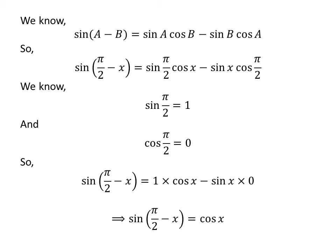As 1 times cosine of x is equal to cosine of x and sin of x times 0 is equal to 0, sin of half of pi minus x is equal to cosine of x minus 0, which is equal to cosine of x. So the value of sin of half of pi minus x is equal to cosine of x.